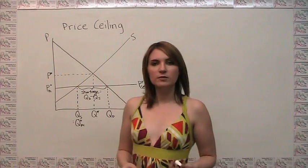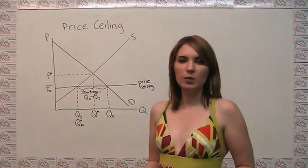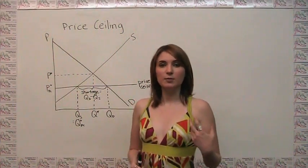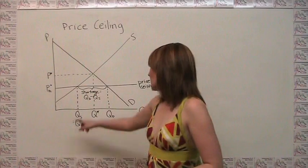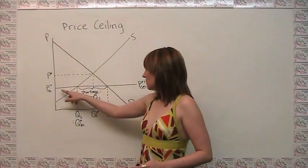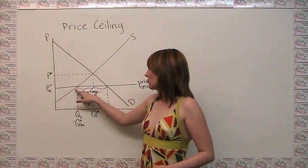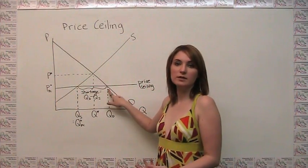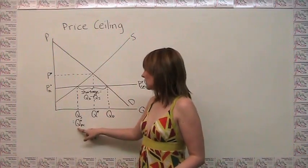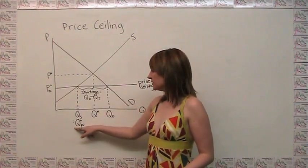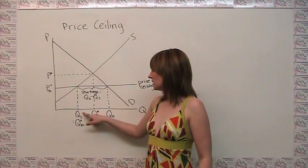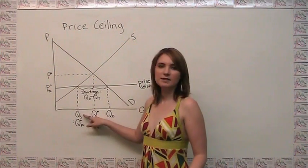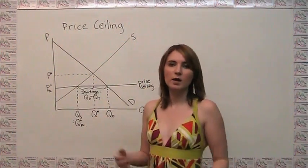If we want to think about the actual number of units that are transacted when a price ceiling is in place, it's helpful to remember that in order to have a trade, you have to have both supply and demand present. So up to this quantity here, you have both supply and demand. But then from this quantity out to this quantity, you have demand but you have no supply, so no trades are happening there. And the quantity transacted with our price ceiling is actually this quantity here, which is the same as the quantity supplied, because we can say that the quantity transacted is really the minimum of the quantity supplied and the quantity demanded.